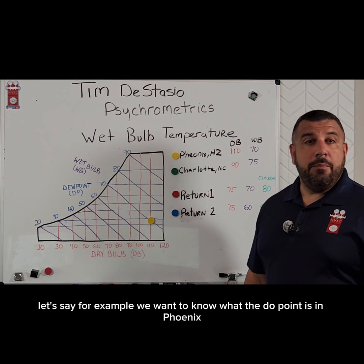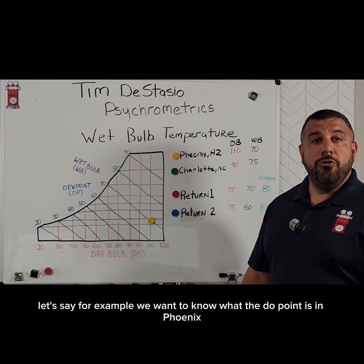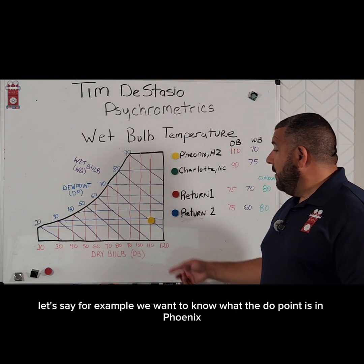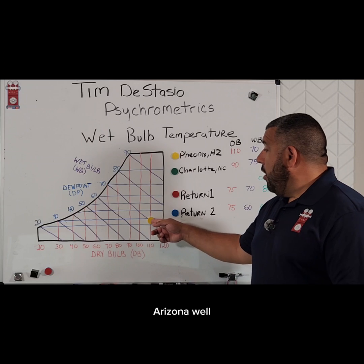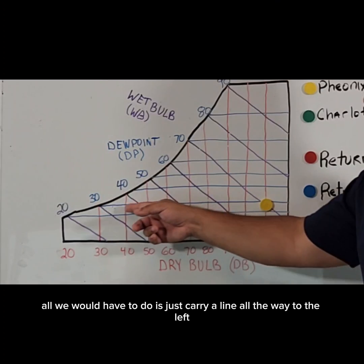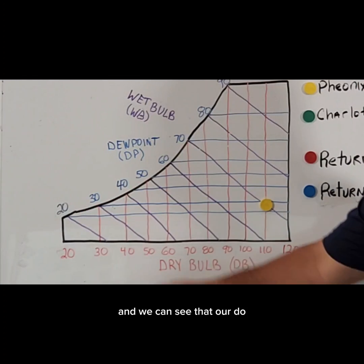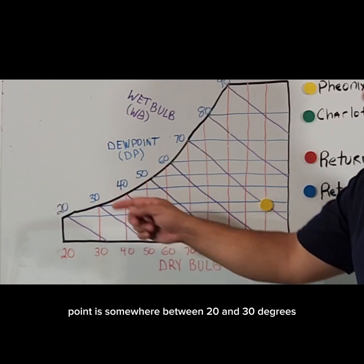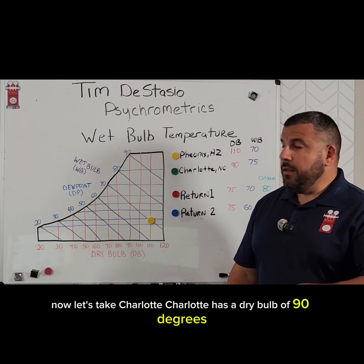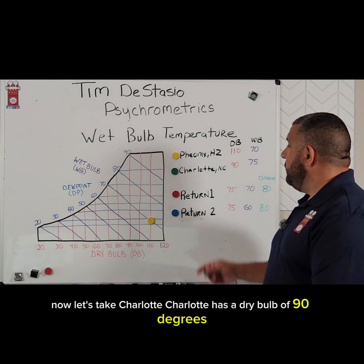Let's say we want to know what the dew point is in Phoenix, Arizona. All we would have to do is carry a line all the way to the left, and we can see that our dew point is somewhere between 20 and 30 degrees. Now let's take Charlotte.